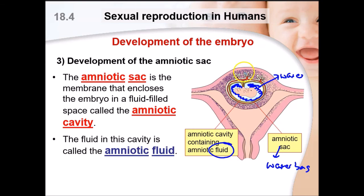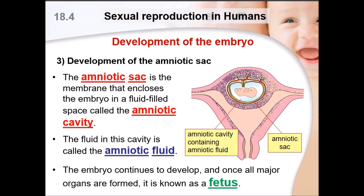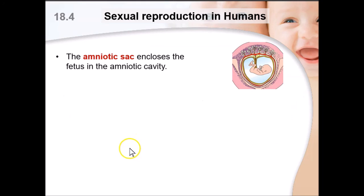So before you are born, you are moving around inside this liquid, covered by the sac, in the amniotic cavity, attached to the placenta via your umbilical cord. The embryo continues to develop from a ball of cells; once major organs are formed it is known as the fetus, though these organs continue to develop throughout the pregnancy.